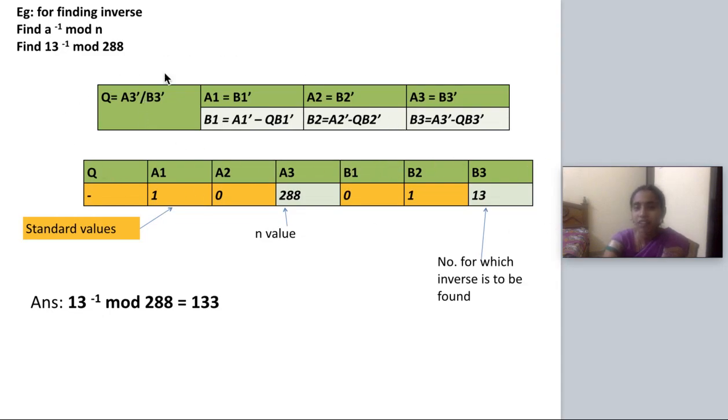We are having formula for evaluating each and every column. Q will be A3 dash divided by B3 dash. Dash in the sense you have to take the value from the previous row. And A1, A2, A3 will be having B1 dash, B2 dash and B3 dash respectively. Then B1 will be A1 dash minus Q times B1 dash. Likewise it goes for B2 and B3. So let us see an example.